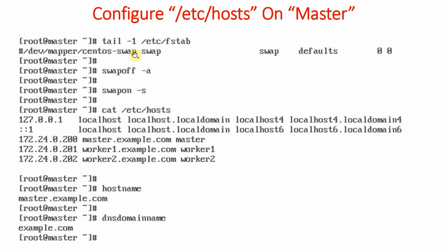After commenting the line and saving the file, we run the command 'swapoff -a', which will turn off the swap partition. Alternatively, if you do not want to run this command, just reboot the system and the changes will take effect automatically.